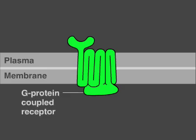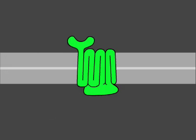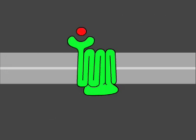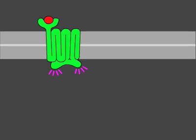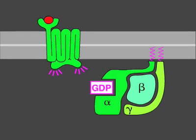Many G-protein-coupled receptors have a large extracellular ligand-binding domain. When an appropriate protein ligand binds to this domain, the receptor undergoes a conformational change that is transmitted to its cytosolic regions, which now activate a trimeric GTP-binding protein, or G-protein for short.